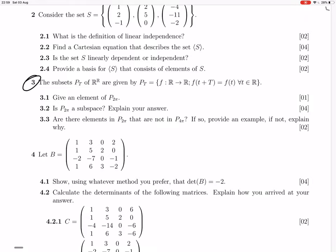Okay, question 3. The subsets Pt of R to R are given by Pt equals all those functions from R to R, such that f of t plus t equals f of t for all t in R. So it's functions that are periodic with a period of t.